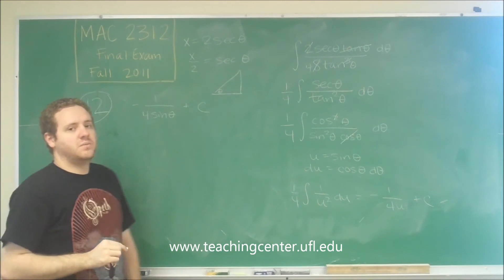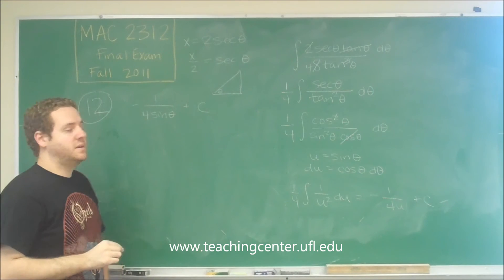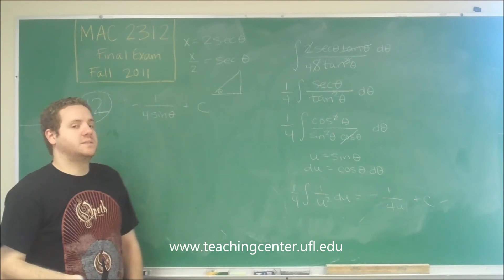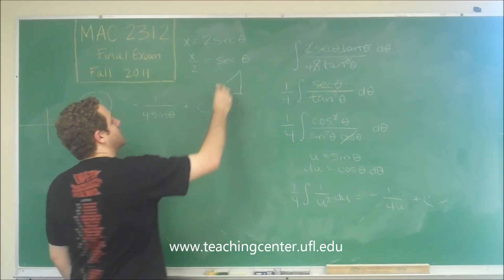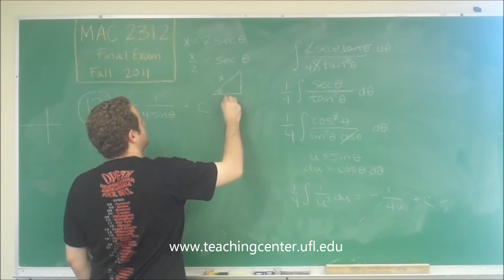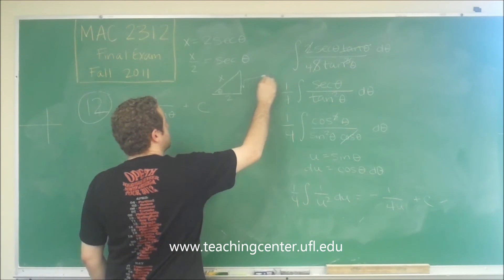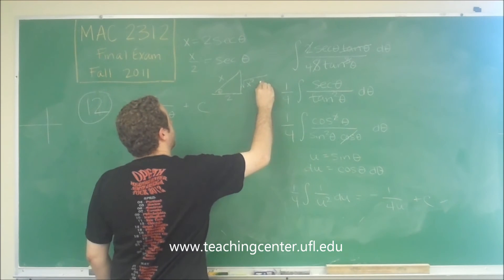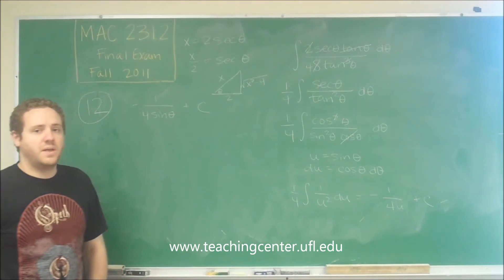So secant, you're going to remember, is the reciprocal of cosine. So instead of being adjacent over hypotenuse, it would be hypotenuse over adjacent. So we'd have x here and 2 here. That means this is going to be square root of x squared minus 4 by Pythagorean theorem.